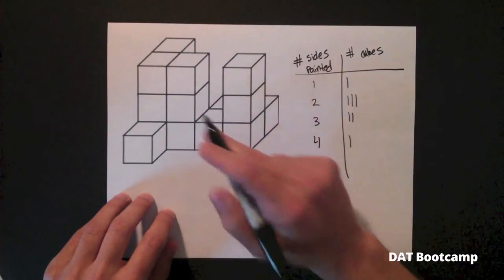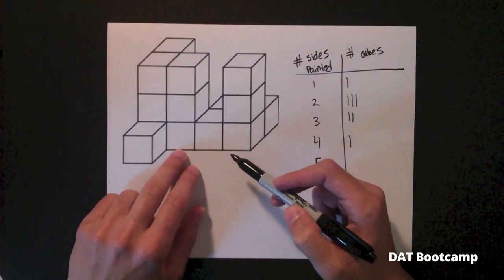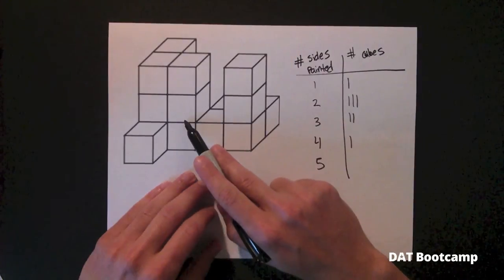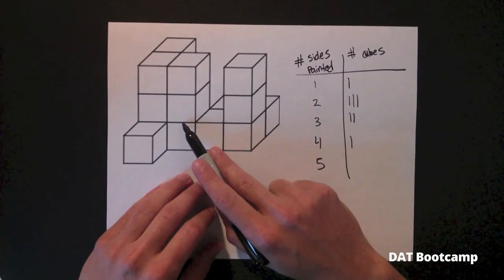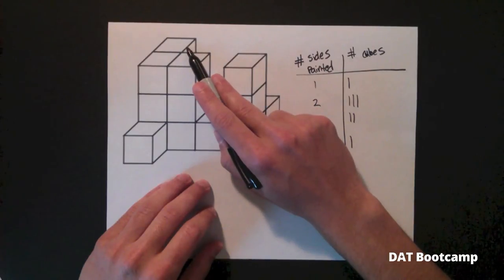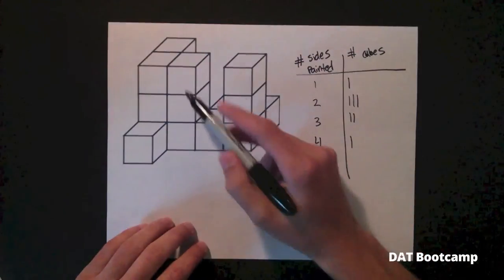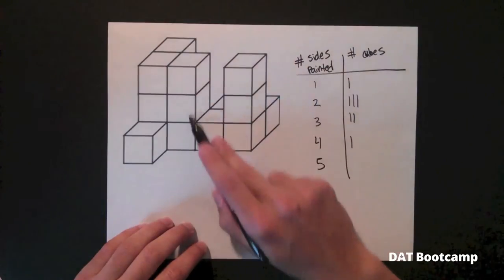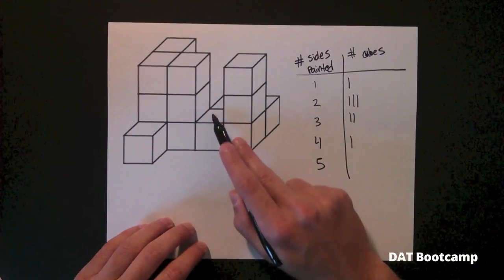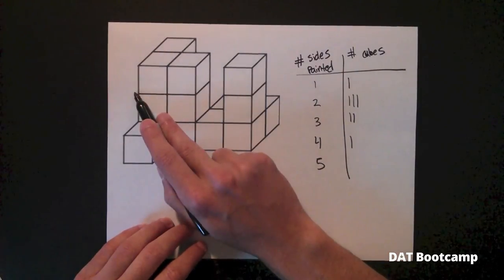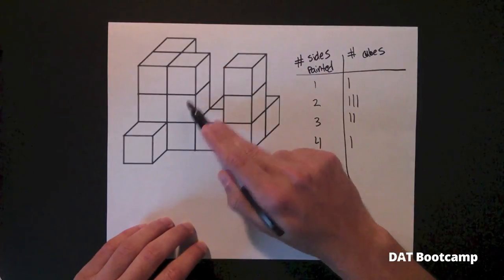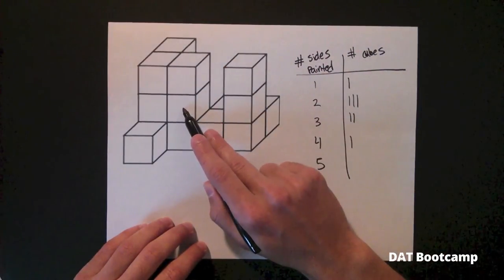Let's move on to the cube all the way in the back. This one requires a lot of spatial thinking because we can't see it at all. But we know it must have three sides painted because if you look at the structure, it's a single column moving all the way down. That cube at the bottom has nothing to its right, nothing to its left, and nothing behind it. So that cube has three sides exposed.